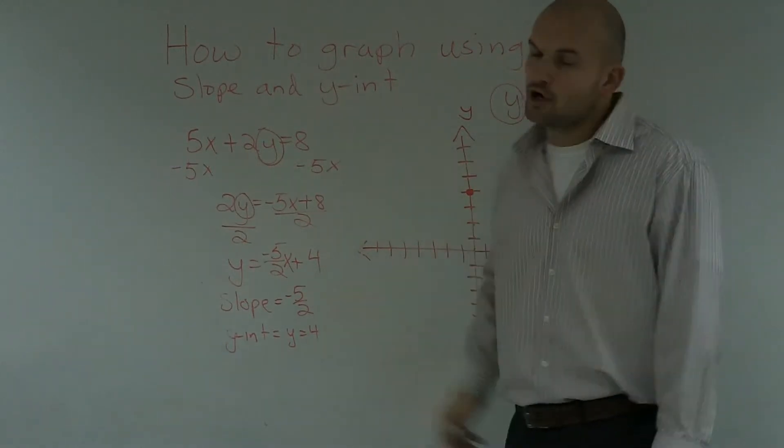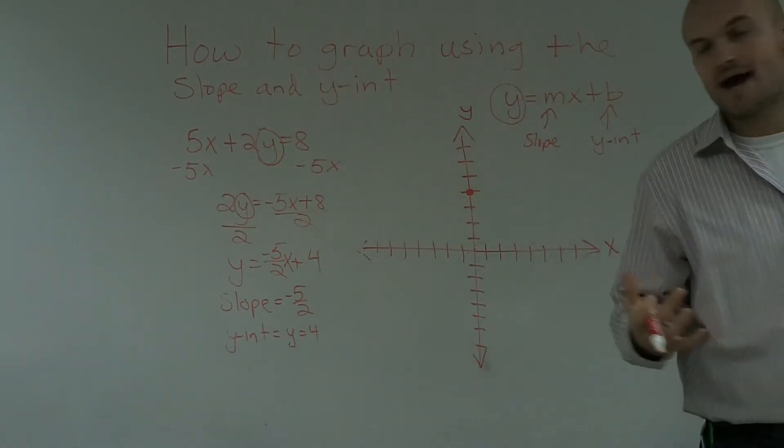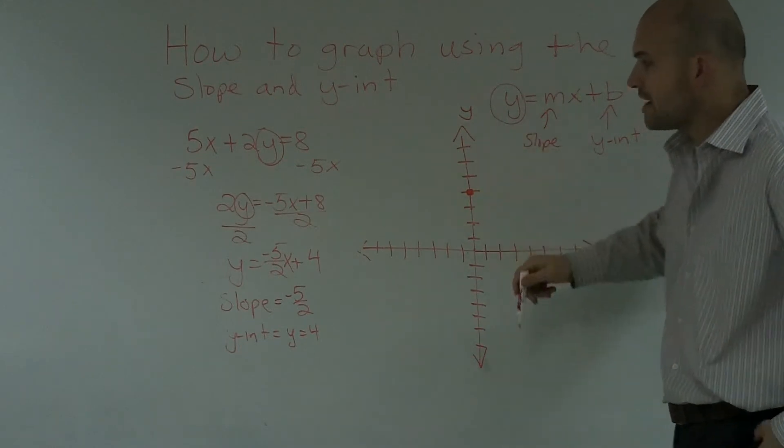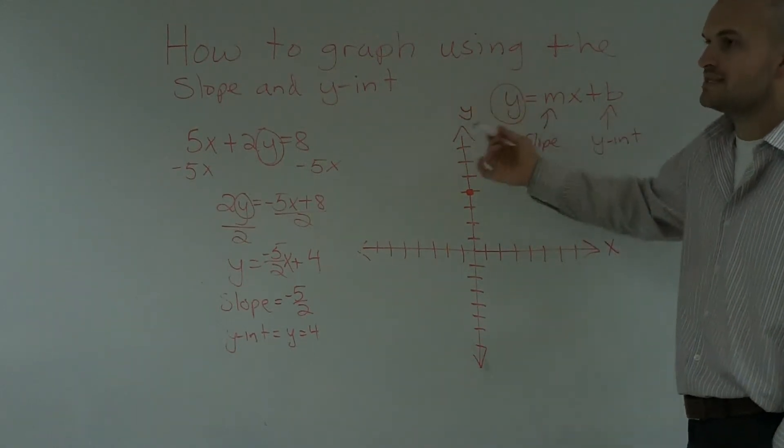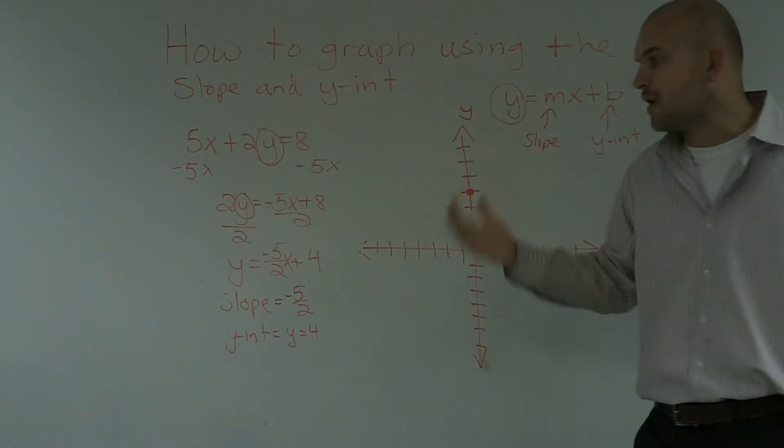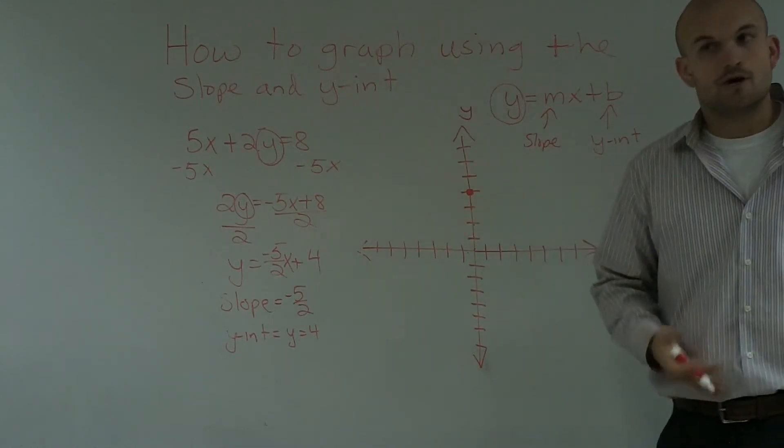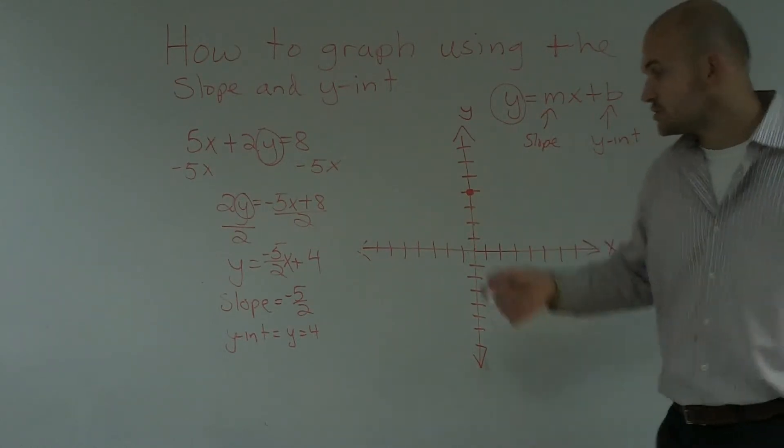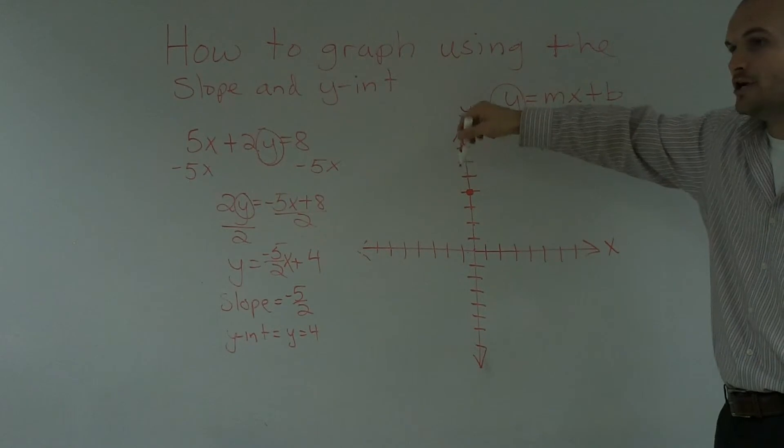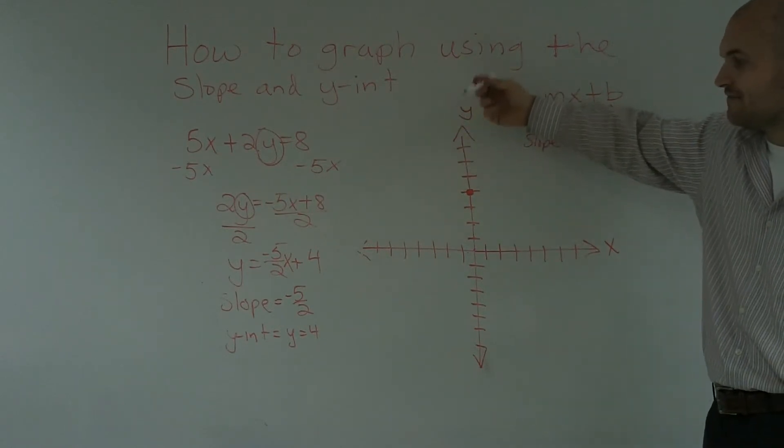Now, the next thing we figure is the slope. Well, we know the slope is negative 5 halves. So, how is that going to relate to my graph? Well, what the slope tells you, remember the slope is the change in y over the change in x between any two points. So, if I have one point, I know that the change in y is going to be negative 5 over 2.